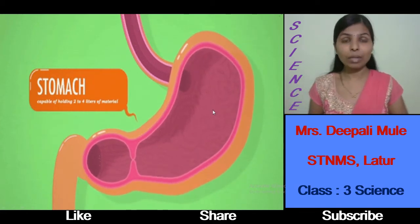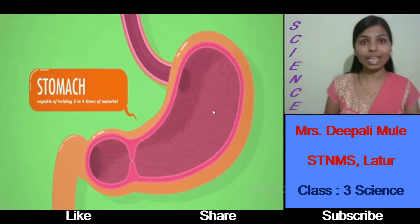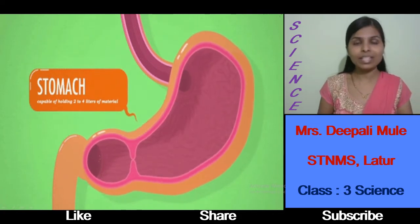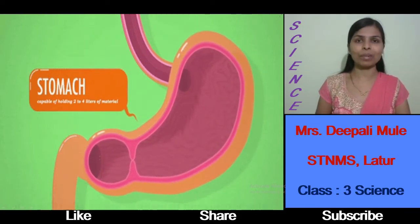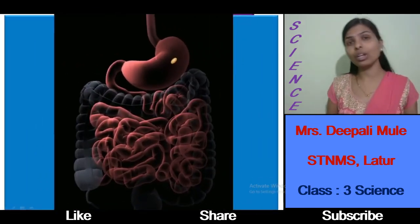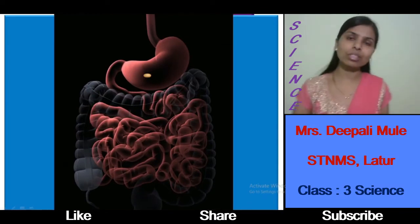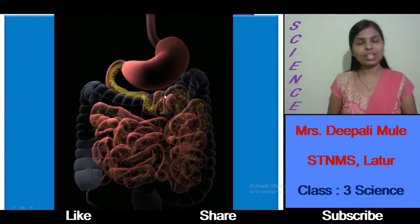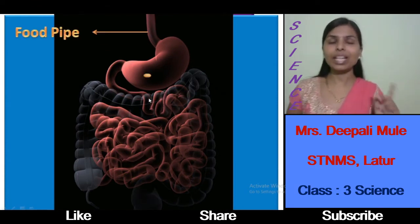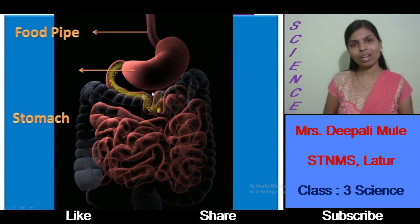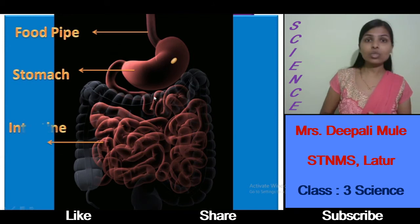In the stomach, many different types of digestive juices are present to digest food properly. Next we are going to learn about different organs — the intestines. Here we can see the food pipe, stomach, and the intestines.